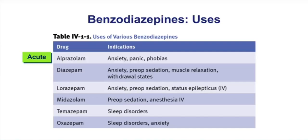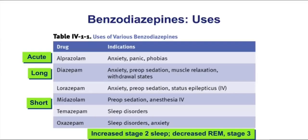Diazepam is a long-acting benzodiazepine, whereas midazolam is a short-acting drug. Diazepam is useful for a variety of conditions including anxiety, as a preoperative sedative drug, muscle relaxation, and even for withdrawal states. Short-acting drugs like midazolam make good IV anesthetics. The other three drugs — lorazepam, temazepam, and oxazepam — all have a special pharmacokinetic property we'll discuss shortly. Benzodiazepines increase stage II sleep but decrease REM and stage III. These drugs can be used for sleep disorders, but they impact sleep stages.